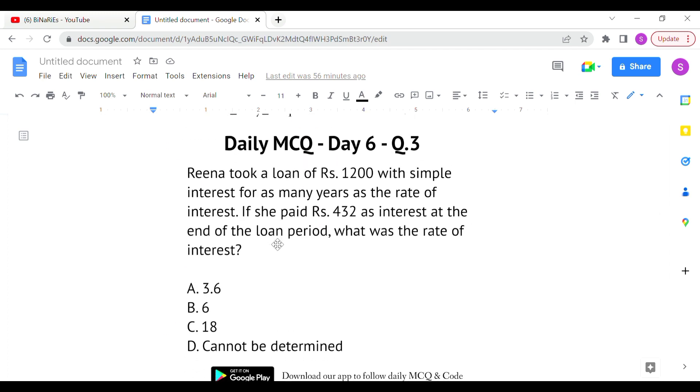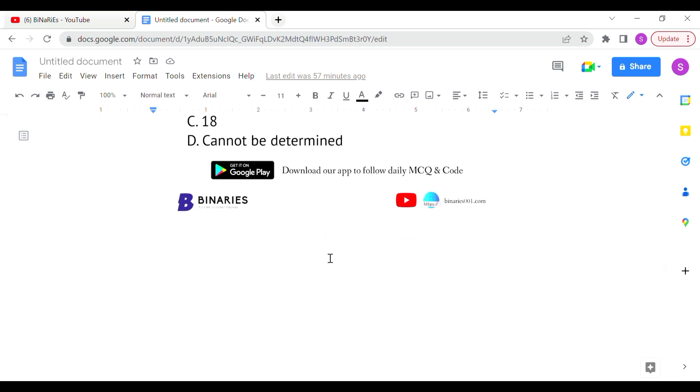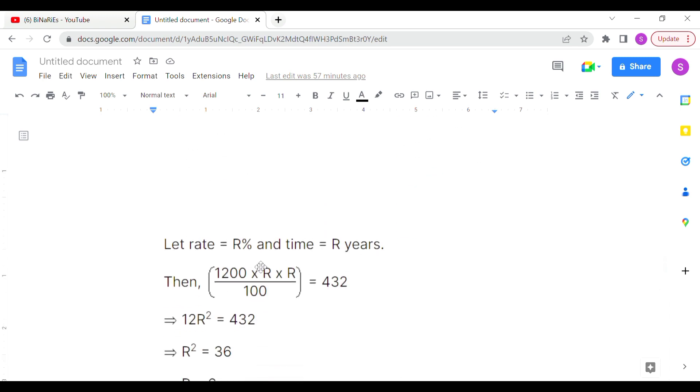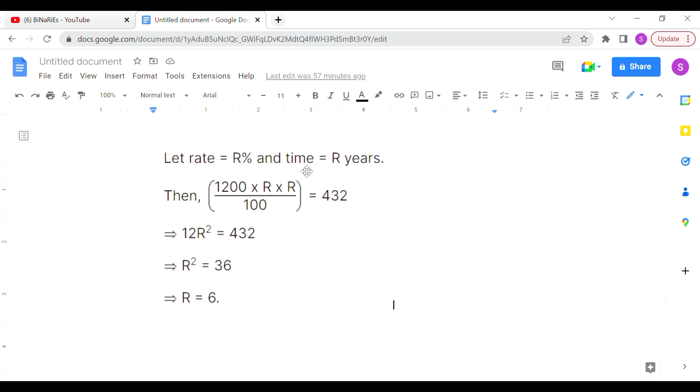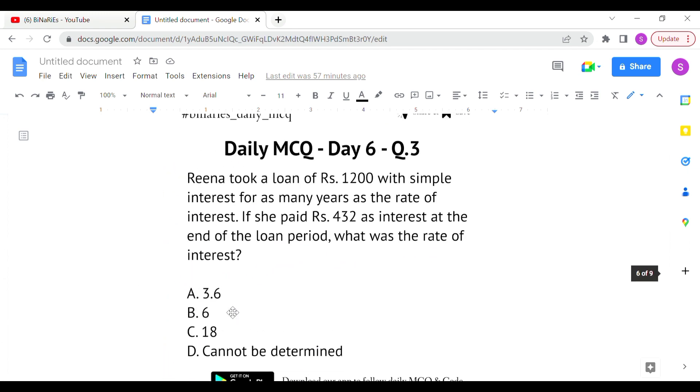Last question: Reena took a loan of rupees 1200 with simple interest for as many years as the rate of interest. This means the rate of interest and number of years are equal. If she paid rupees 432 as interest at the end of the loan period, what was the rate of interest? Using the formula: SI equals P times N times R divided by 100. Since N equals R, we have: 432 equals 1200 times R times R divided by 100. Solving this equation, R equals 6. So option B is the correct answer.